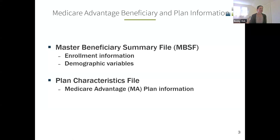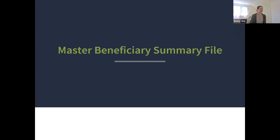The two files I'll be discussing now are the MBSF and the plan characteristic files. The Master Beneficiary Summary File, or MBSF, contains enrollment information and demographic variables, and the plan characteristics file contains Medicare Advantage plan information. We'll start with the MBSF.